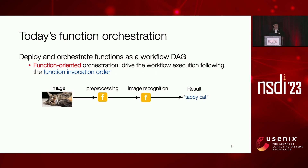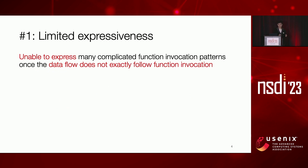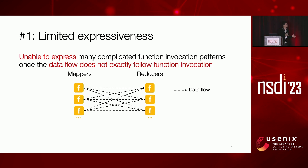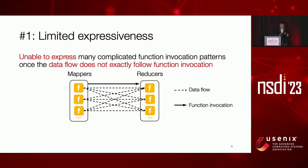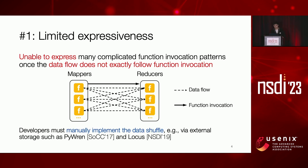But it can have three major limitations. The first limitation is that the function-oriented orchestration cannot express many complicated workflow patterns, as long as the data flow does not exactly follow the function invocation order. To show this, let's take an example of MapReduce. MapReduce is a classic operation in data analytics — it needs an all-to-all data shuffle, where each mapper produces data for each reducer. Existing platforms cannot handle such fine-grained data exchange, so users typically need to manually implement the data shuffle, probably via external storage.